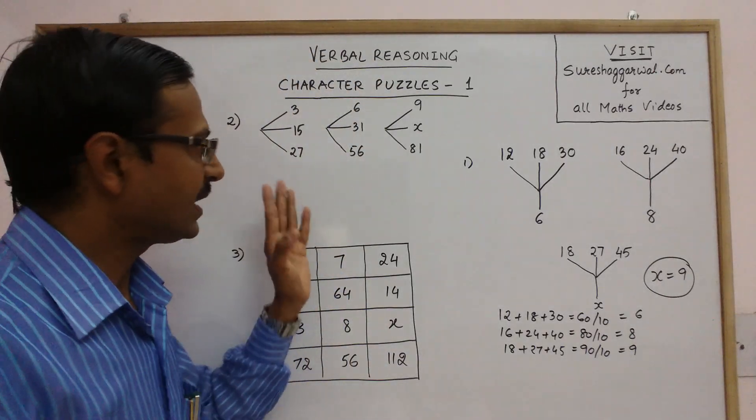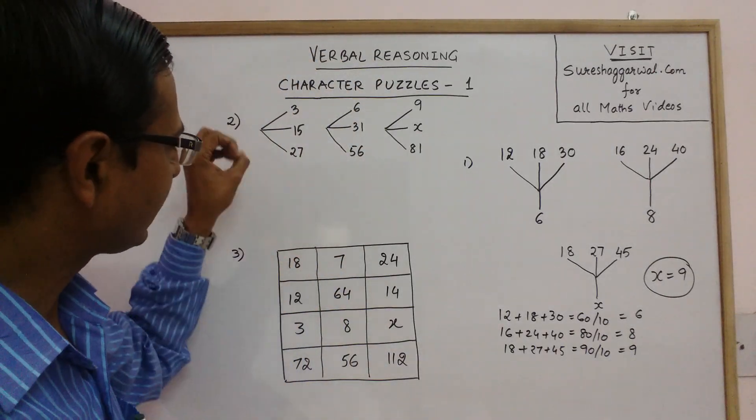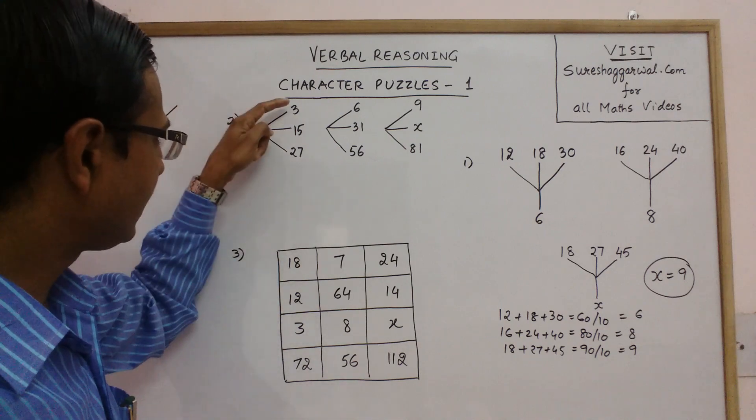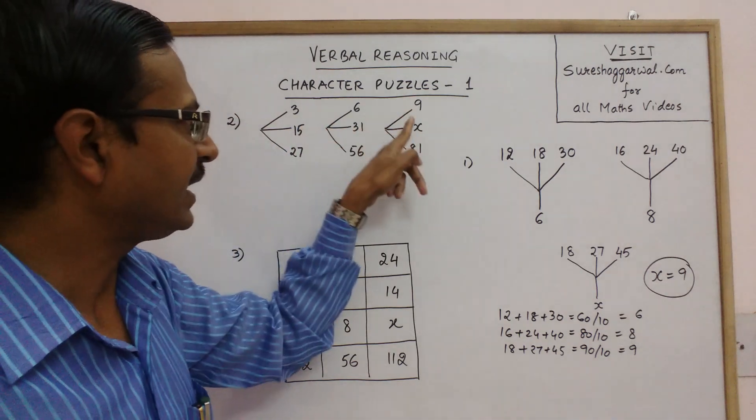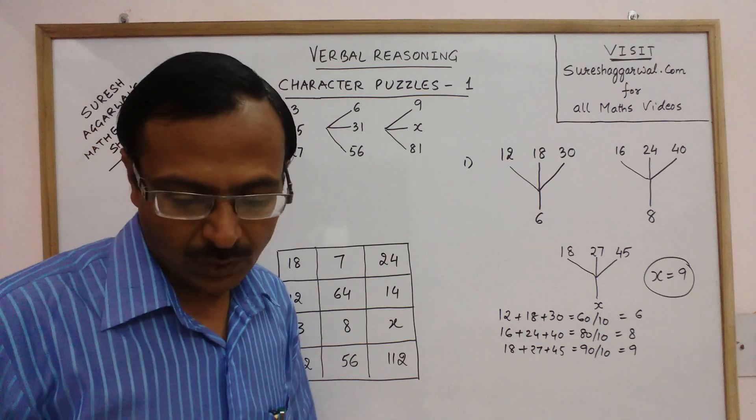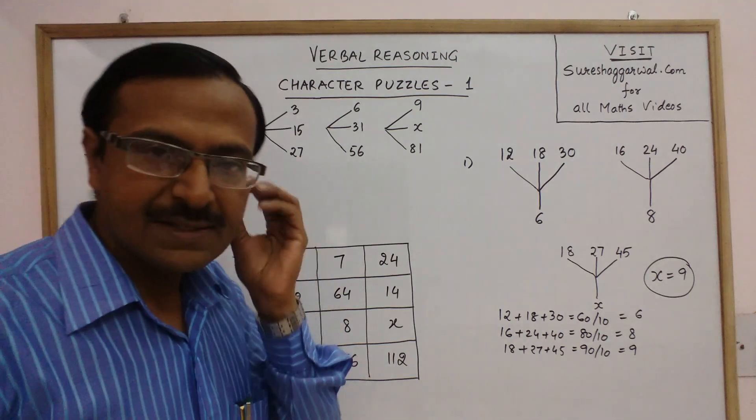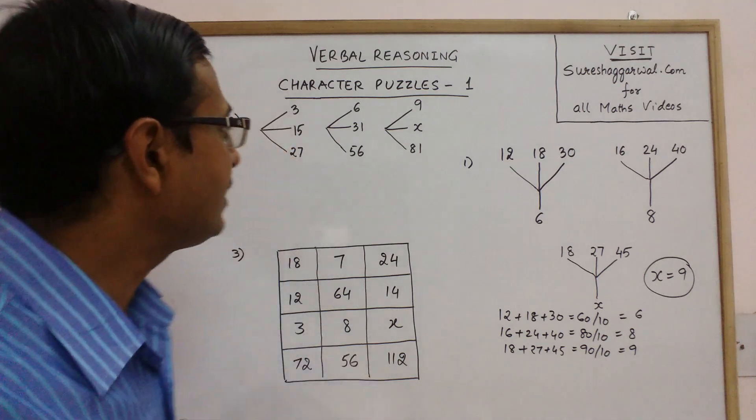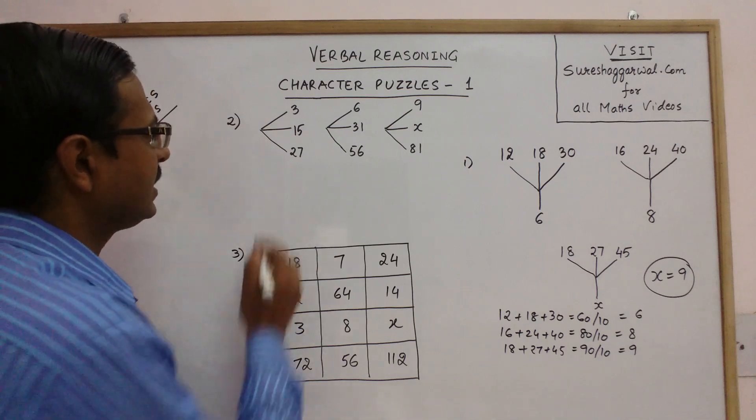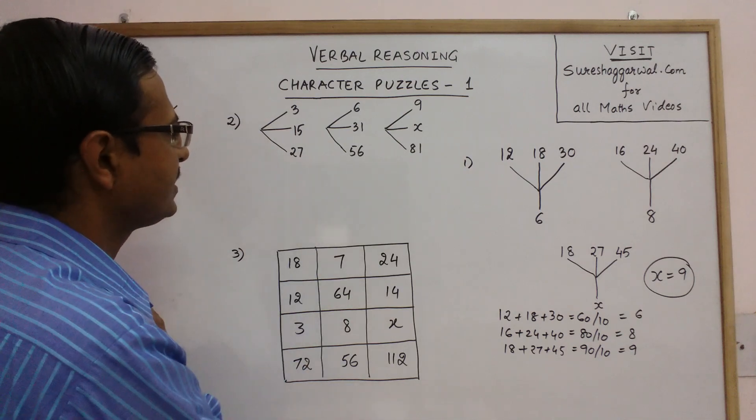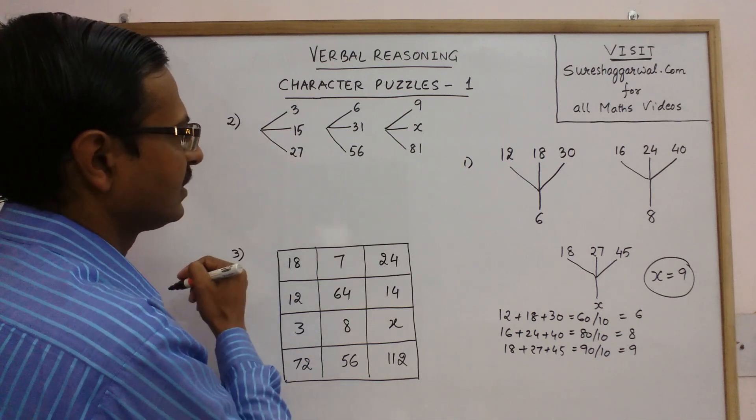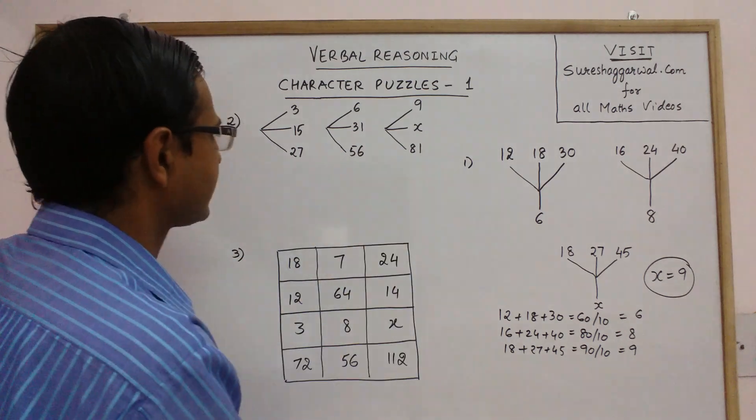Now, let us understand one more question. Now see here, the pattern the character made is different, 3, 15, 27, 6, 31, 56, 9, x and 81. Now, what kind of pattern applies here? Now see, if you see this number, this is largest, here also this is largest and here also this is largest.